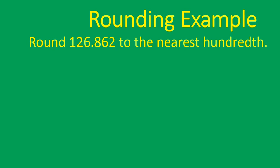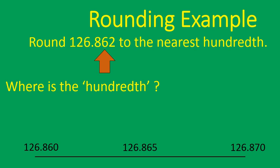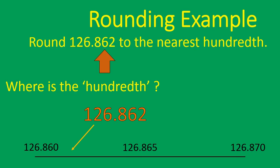Let's look at another example: rounding 126.862 to the nearest hundredth. Where's the hundredth? The hundredth is the six on the right of the decimal. So what we're rounding between is the hundredth of six or the hundredth of seven. We use the number one place to the right of that place value to determine if we're going to round up or round down. 126.862 — the two makes it closer to 860 than to 870, just like 62 is closer to 60 than to 70. It's the same principle, only we're working on the right side of the decimal.